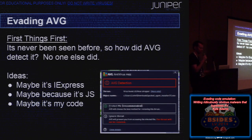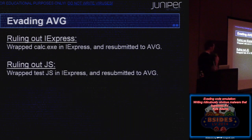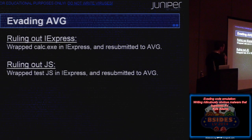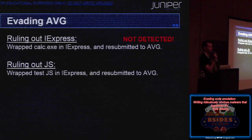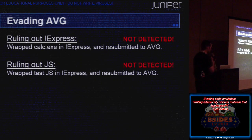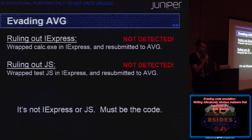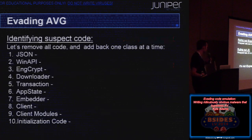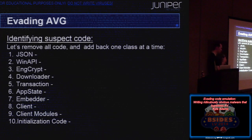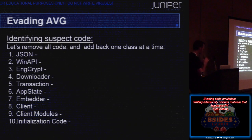This is exactly the type of thing malware authors in the wild actually do — they test their viruses on AV, see which ones catch it, and go through this process to figure out why. Ruling out JS: the first thing is, if I pack a JS file with iExpress, does anything happen? Do I get detected just for that even if the JS has nothing in it? I don't get detected, so it's not iExpress and it's not JavaScript. It's something I did in the virus that caused AVG to detect me.